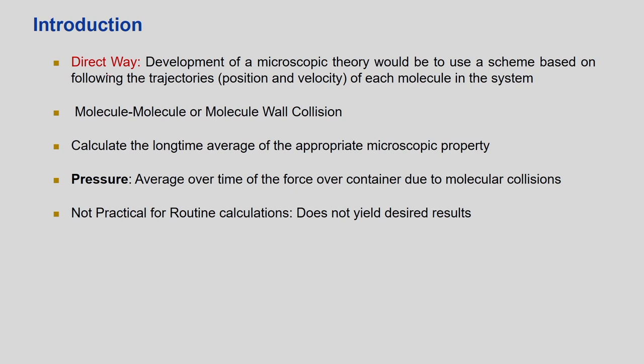If we cannot measure those collisions, if we cannot measure the force for each and every molecule, what is the alternative? One direct way is: instead of measuring all the collisions, we develop a microscopic theory used as a scheme based on following the trajectories — that is, the position and velocity of each molecule. You track the position and velocity of each molecule.